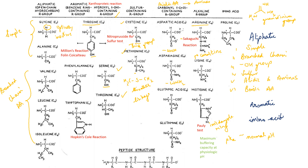This finishes the aliphatic amino acids. Coming on to aromatic amino acids — there are three aromatic amino acids: tyrosine, phenylalanine, and tryptophan.